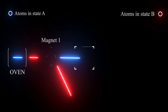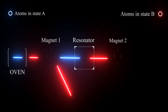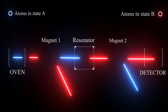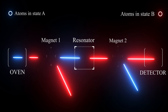We are left with atoms in state A only, which proceed further through a resonator, where they are subjected to microwave radiation that triggers some of the atoms to change to state B. Some atoms still in state A after the resonator are then removed by a second magnetic field. The detector counts all the atoms that have changed to state B. The percentage of these atoms depends on the frequency of microwave radiation — the more it is in sync with the inherent oscillation frequency of the atoms, the more atoms change their state.